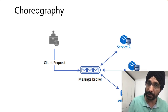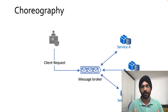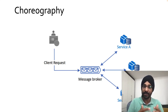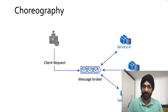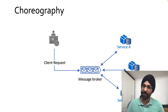Each approach has its pros and cons. Choreography can be quite useful for a small set of services — three to five services can publish and consume events easily. But as the number of services grows, it can be tedious to manage, hard to debug, and integration testing can be difficult. Orchestration works well for a larger number of services, but the central authority can be a single point of failure.